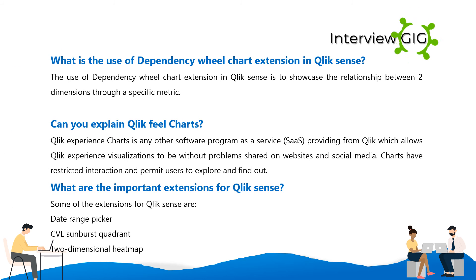The dependency wheel chart extension in Qlik Sense is used to showcase the relationship between two dimensions through a specific metric. Qlik Sense Charts is a Software as a Service offering from Qlik which allows Qlik Sense visualizations to be shared on websites and social media, with restricted interaction but allowing users to explore and find out insights. Some important extensions for Qlik Sense include the date range picker, CVL sunburst, quadrant, and two-dimensional heat map.